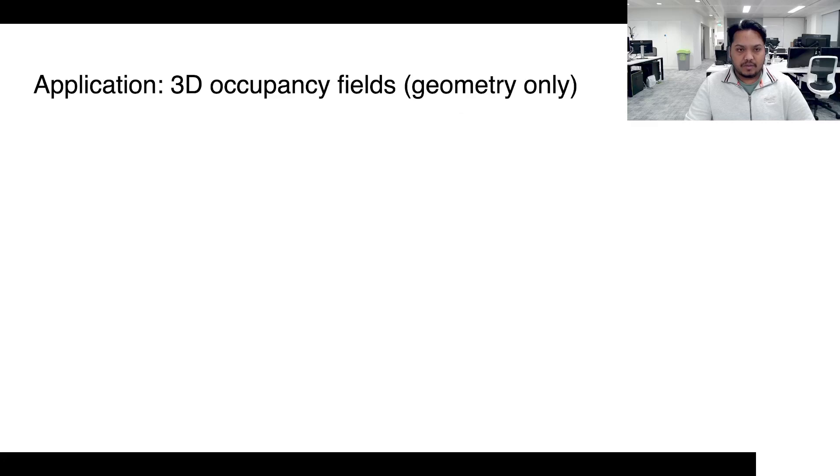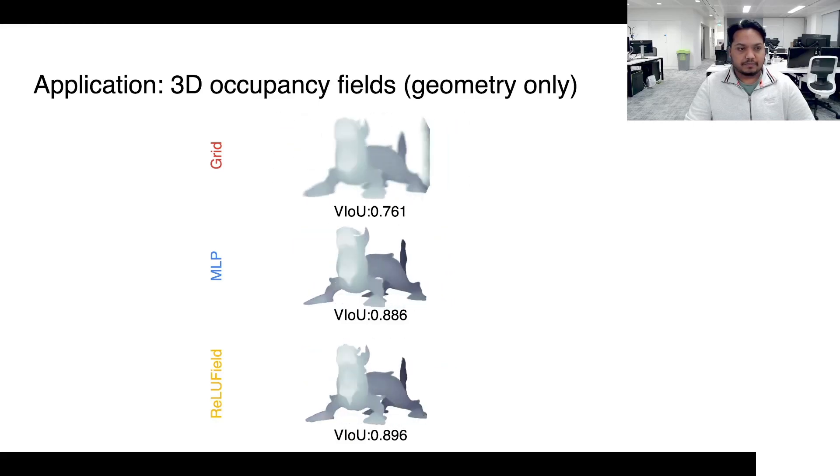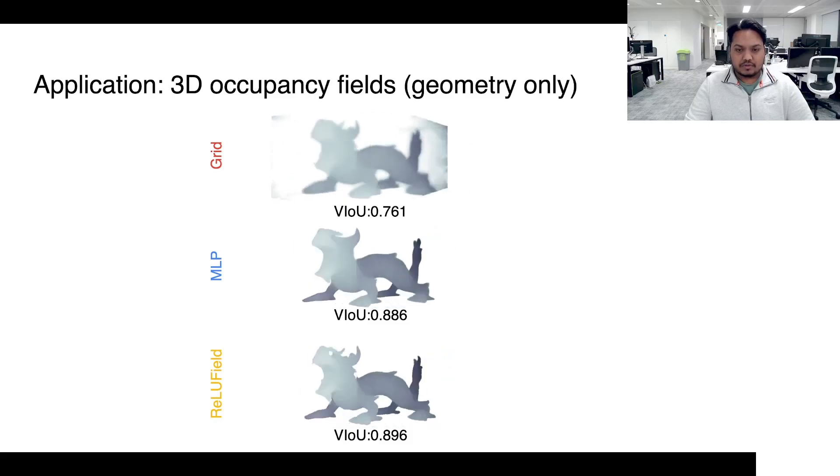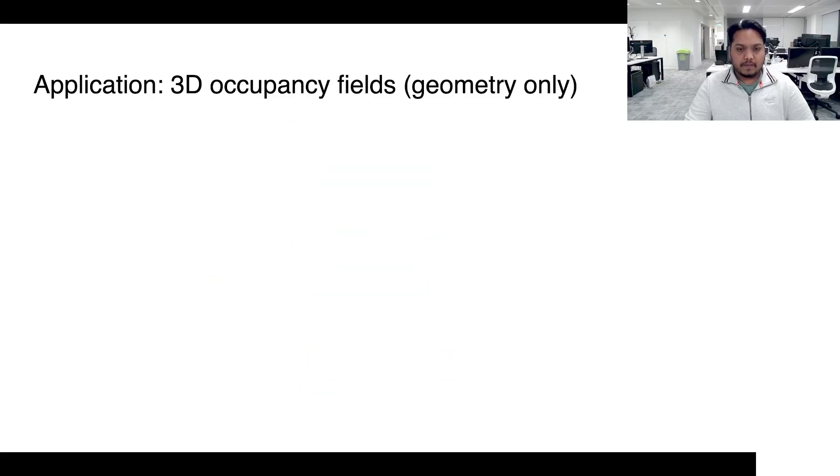For modelling geometries through 3D occupancy fields, we see that as usual grids give blurry results, while MLPs do much better. They still fall short compared to ReLU fields on this Dragon example. The numerical performance here is evaluated using the volumetric IOU, which corroborates the visual story. Here is another example of the thigh statue model.